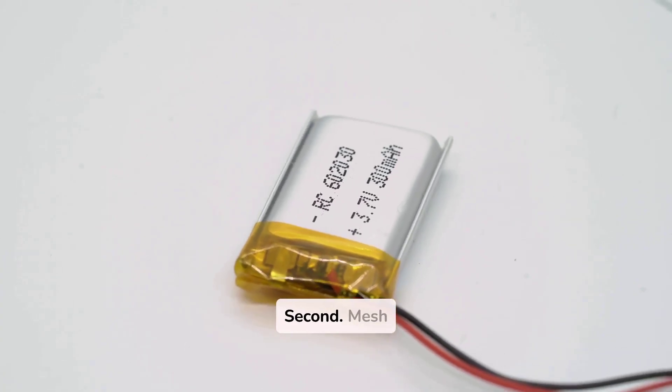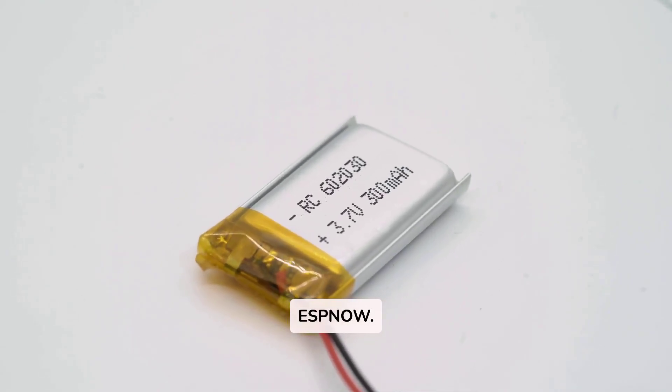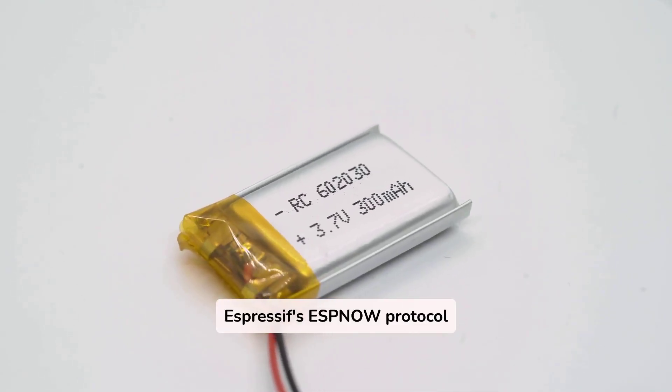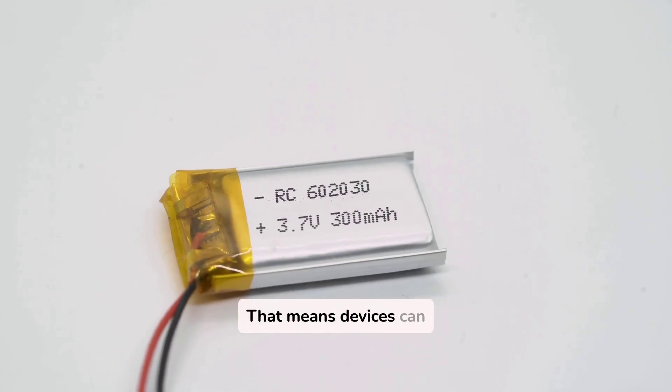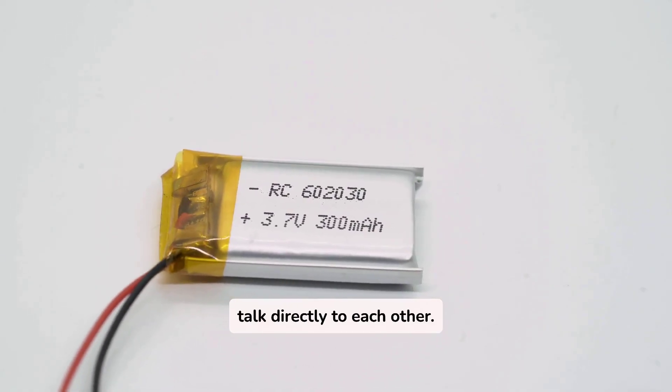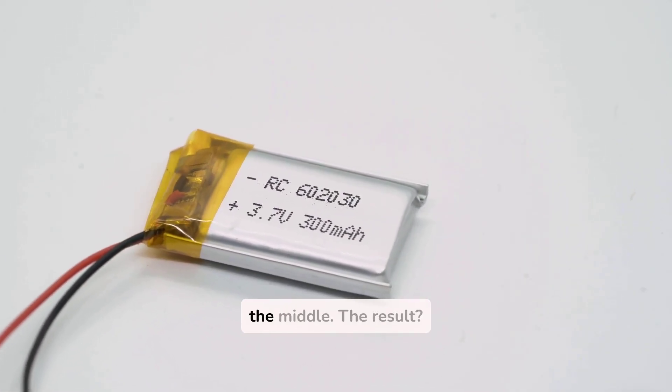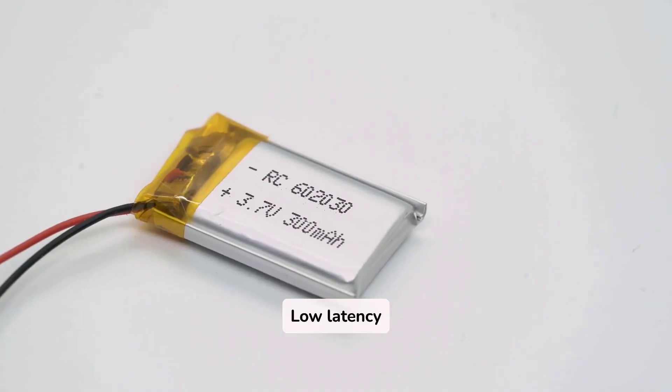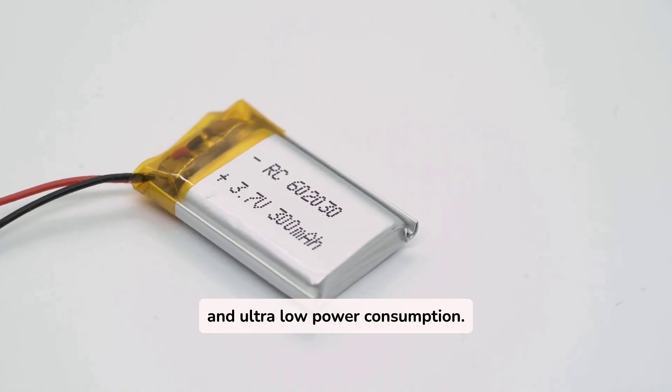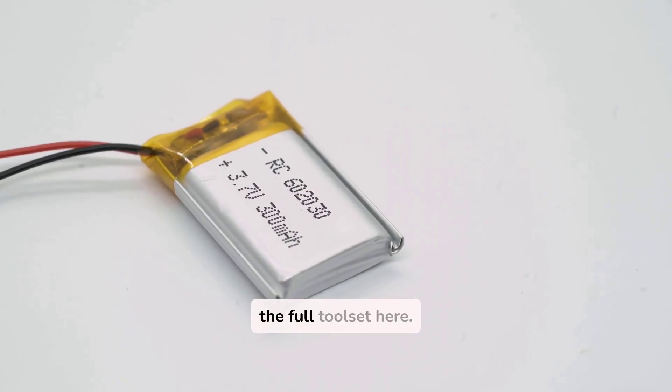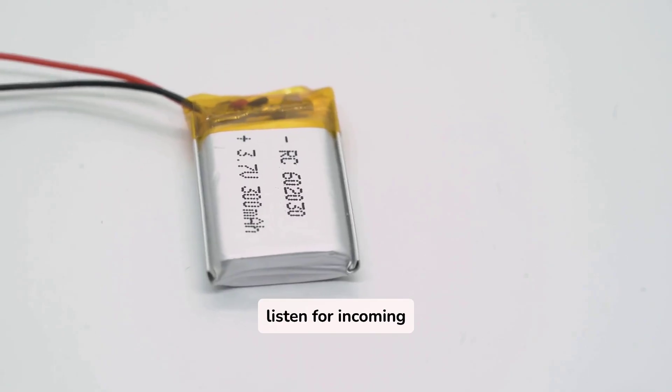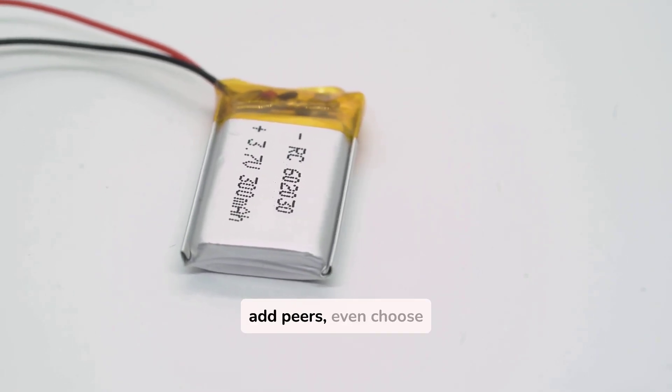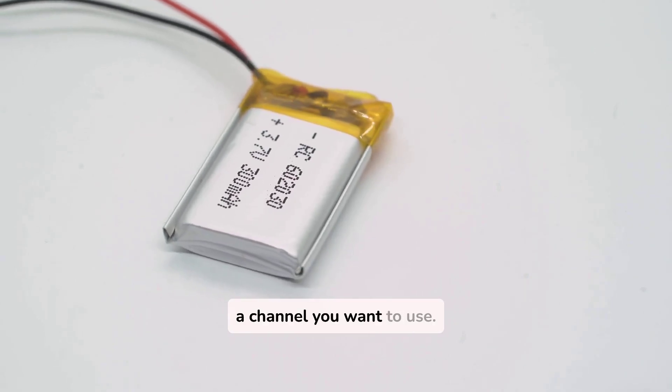Second, mesh networking with ESP Now. Espressif's ESP Now protocol is now baked into ESP Home. That means devices can talk directly to each other, no Wi-Fi router in the middle. The result? Low latency and ultra-low power consumption. You get the full toolset here. Send and broadcast packets, listen for incoming ones, auto-add peers, even choose a channel you want to use.